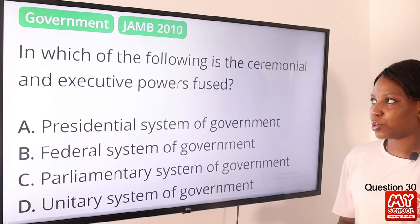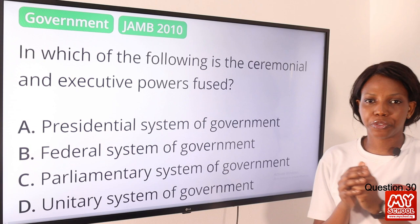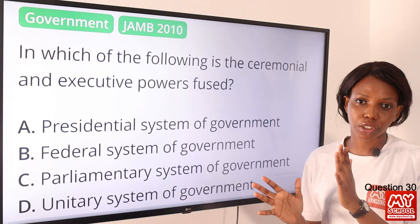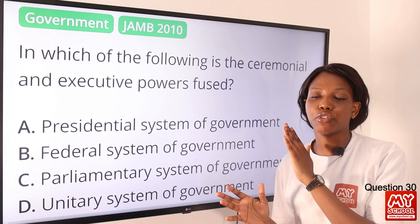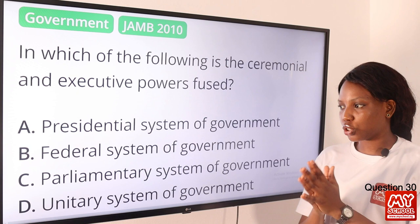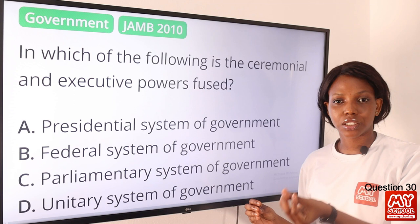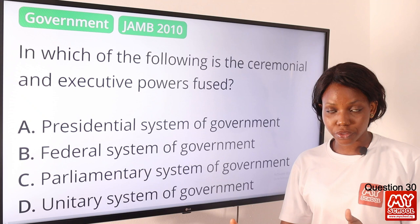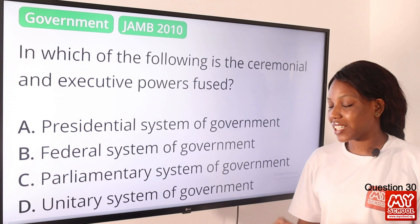Question 30. In which of the following are the ceremonial and executive powers fused? The answer is option A, presidential system of government. In the presidential system, the head of state is the same as the head of government. In the federal system, there is a constitutional division of powers among the three tiers. In the parliamentary system, the head of state is different from the head of government. So the answer is definitely option A, presidential system of government.